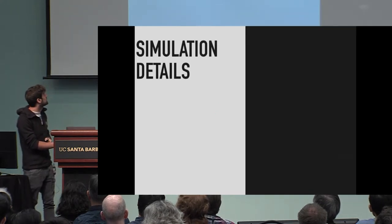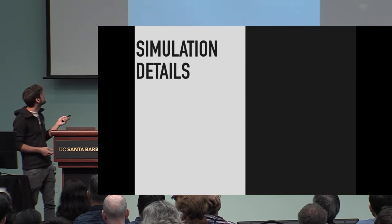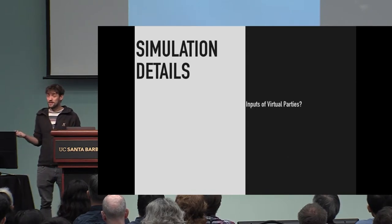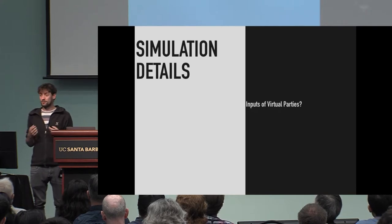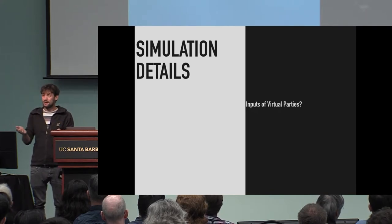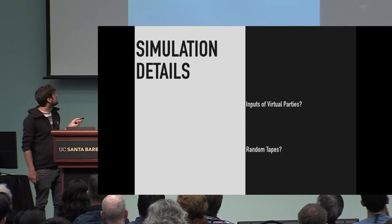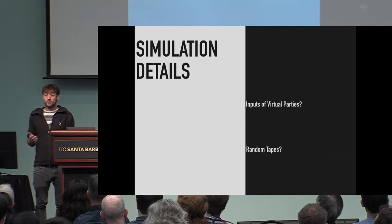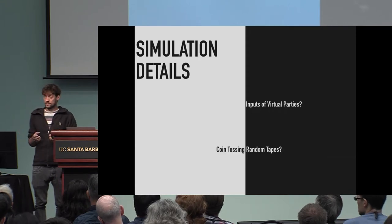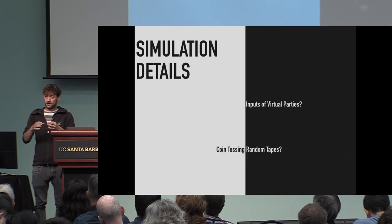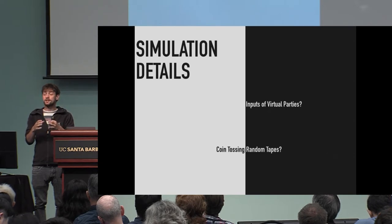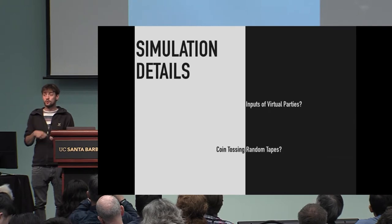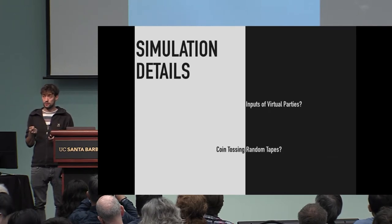There are two small details. First, the parties need to agree on an input and a random tape. One party cannot just distribute their plain input, so we need to take care of this. For the random tapes, we use coin tossing: the set of real parties simulating a specific virtual party run a coin tossing protocol to agree on a random tape to use.